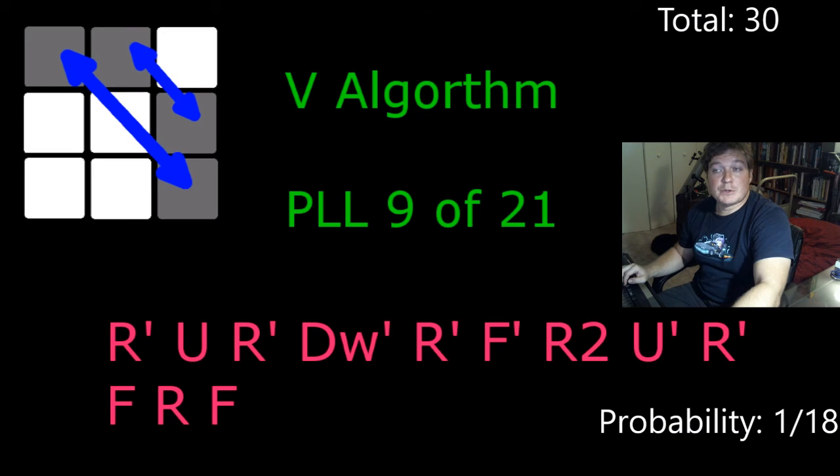The V algorithm, same thing. Four ways it could happen. 30 total cases. Probability one 18th.